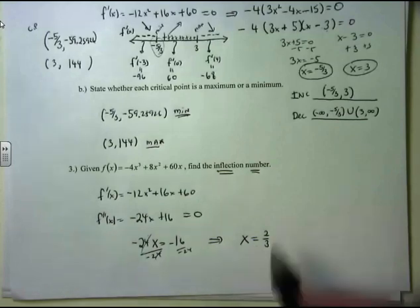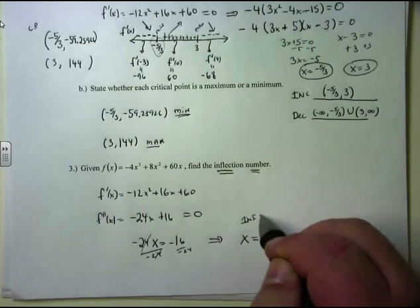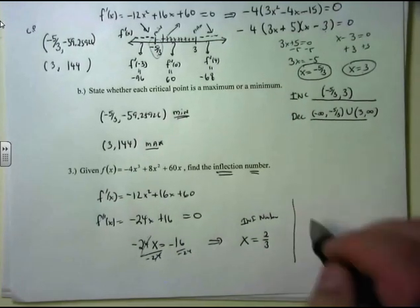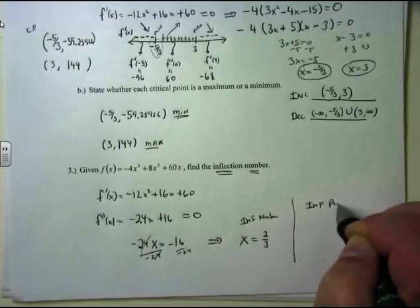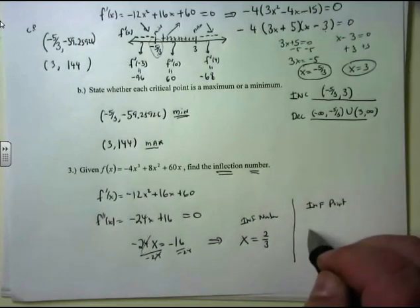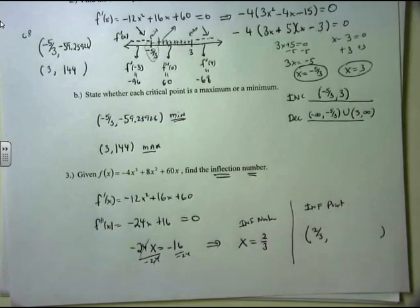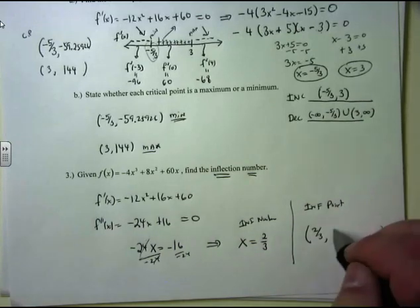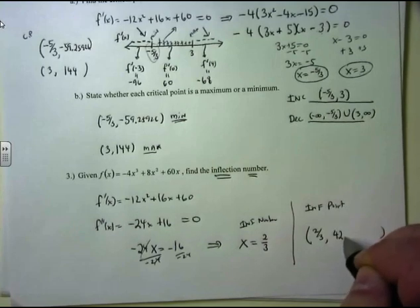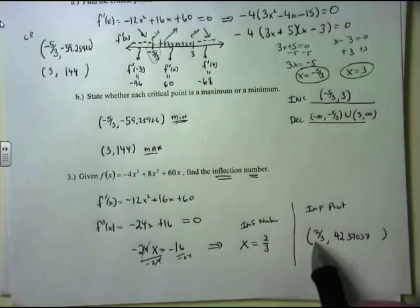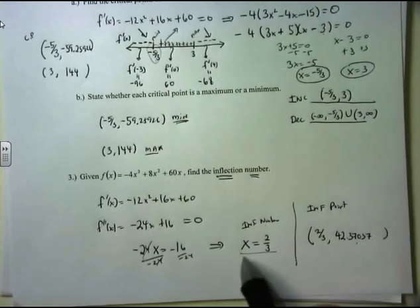So x = 2/3 is the inflection number. If they had asked for the inflection point, I would need the y-coordinate, so I plug 2/3 into the original function and get approximately 42.37037. An inflection point requires a y-coordinate; an inflection number is only the x-coordinate — that's how you distinguish between the two.